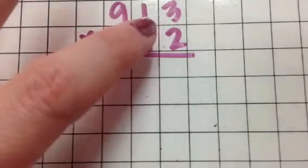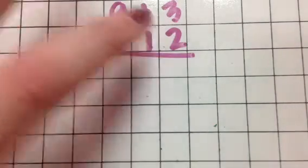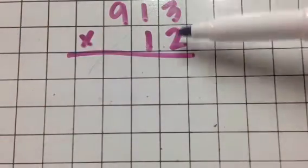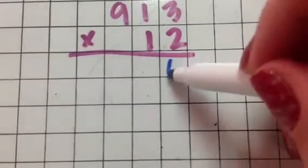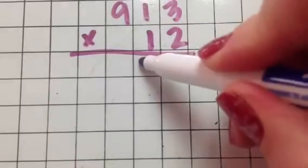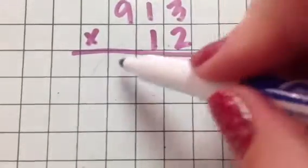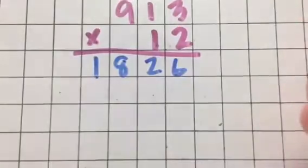So the first thing I'm going to do is simply ignore this 1, because I am going to just work with the 2. So 2 times 3, 6. 2 times 1, 2. 2 times 9, 18. Ta-da!